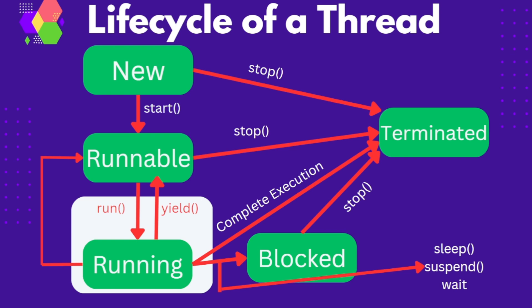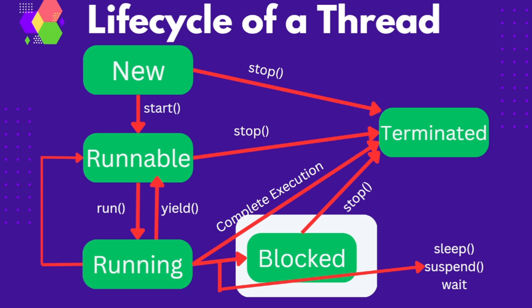This state is known as the running state. This is the state where the thread performs its actual functions — that is, whatever implementation is written in the overridden run method will be executed in this state. Now from this state there are three possibilities: a thread can yield and go back to the runnable state, and whenever its turn comes back again it will start running. The second option is to complete the execution and move to the terminated or dead state, from where it can never return back to any other state. Lastly, it can call sleep, suspend, or wait to move from running to the waiting state.